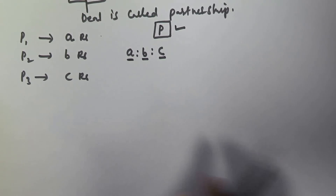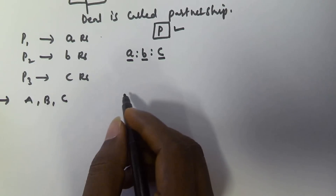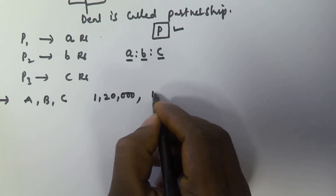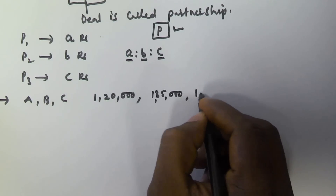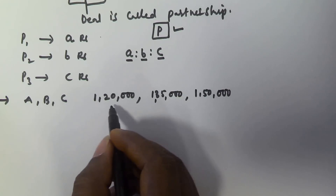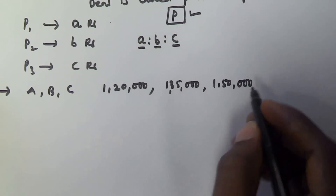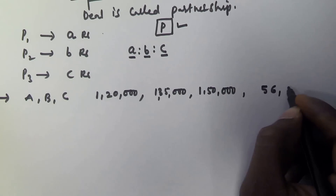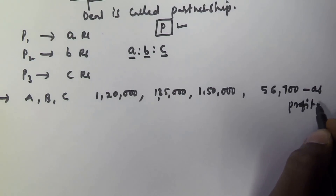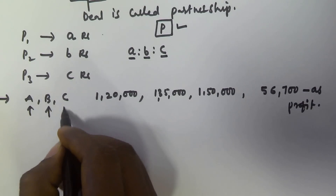Let's consider three persons A, B, and C. They started a business by investing one lakh twenty thousand, one lakh thirty-five thousand, and one lakh fifty thousand respectively. They got fifty-six thousand seven hundred as profit. Now we have to find the share of each person — the share of A, the share of B, and the share of C — out of this profit.